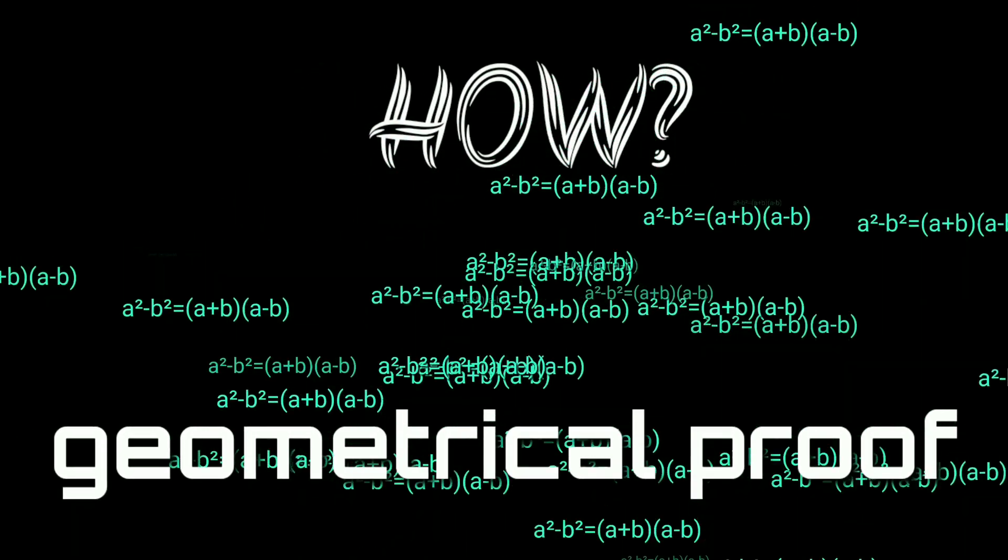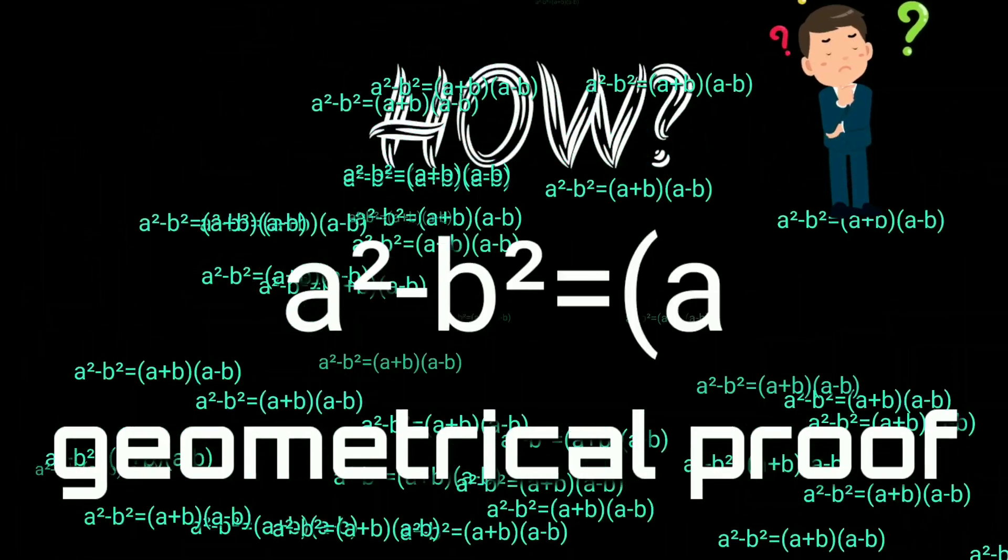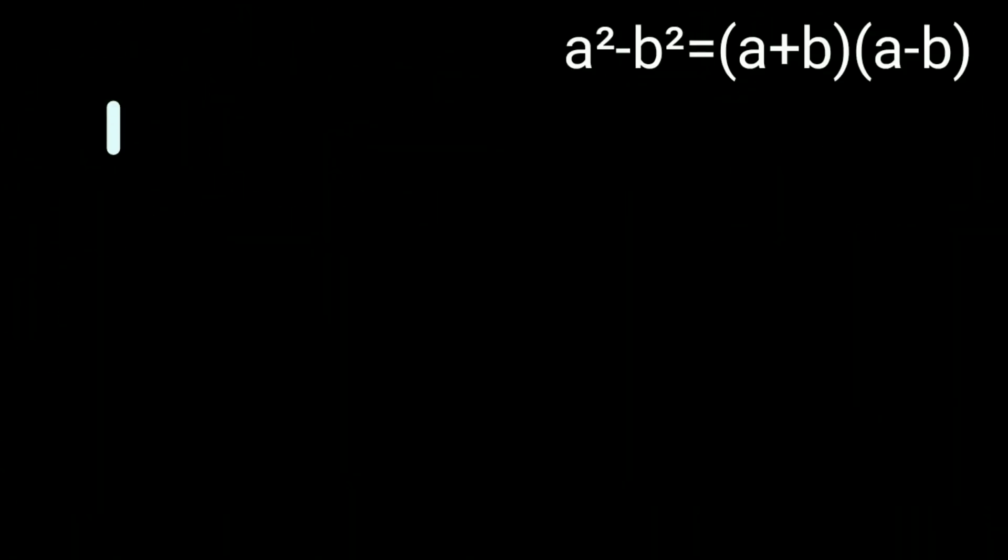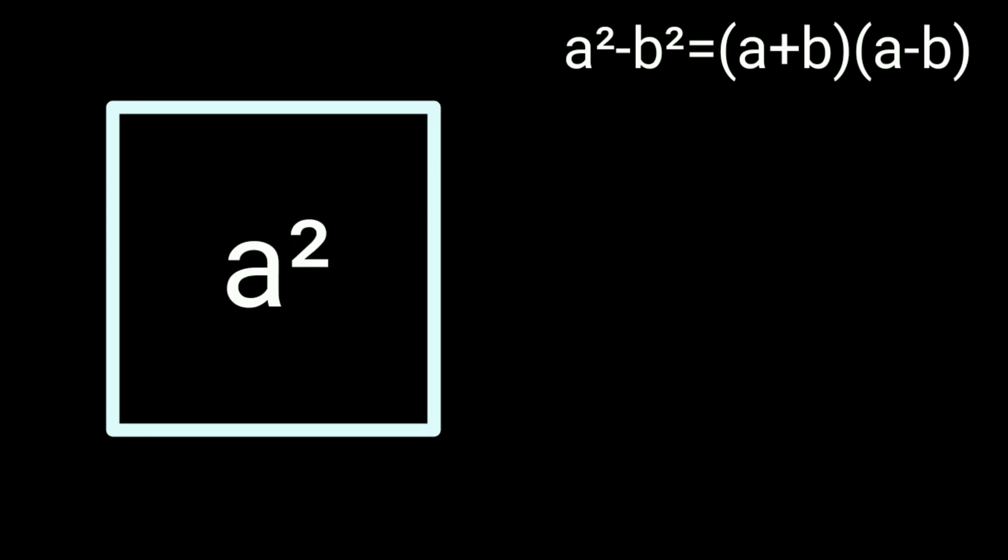Hi, have you ever thought how can you prove the identity a² - b² geometrically? To prove that, construct a square whose area is a², so the side equals a units.